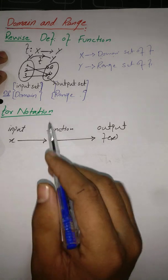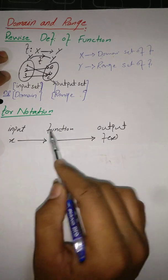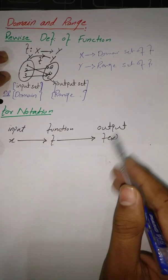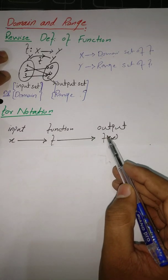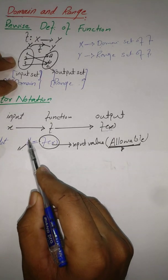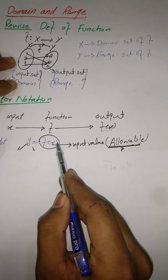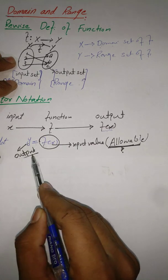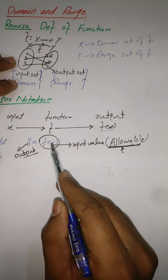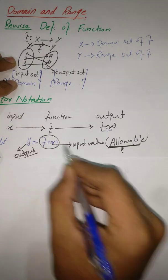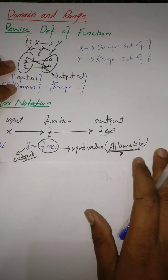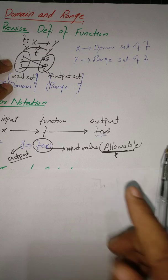Students, here is also the notation to write a function. Let's suppose the input value is x, the function is f, and the output is f(x). As discussed in our previous lecture, the output y equals f(x). Here y is the output and f(x) is also the output, but x is our input value.